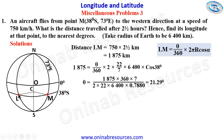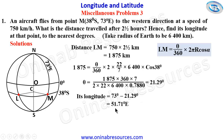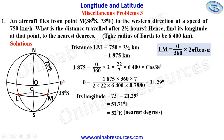To get the longitude of L: both points are in the same region — both in the East — because the longitude of M is greater than the angular difference. Therefore the longitude of L equals 73 degrees minus 21.29 degrees, which gives 51.71 degrees East. To the nearest degree, as specified, that is 52 degrees East — the longitude of L.